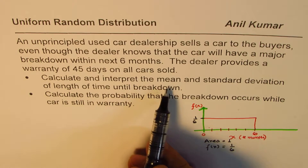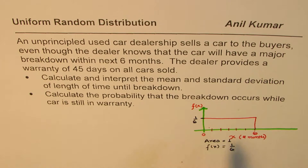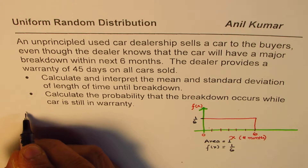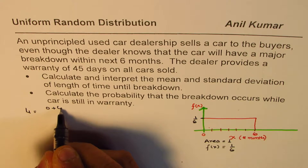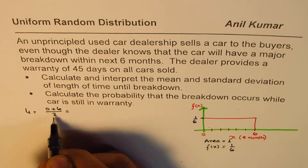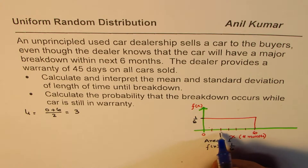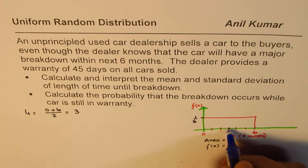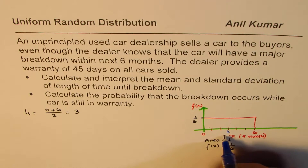Calculate and interpret the mean and standard deviation for such a uniform distribution. The mean will be right at the center — the average value. The mean, which is mu, will be equals to (0 + 6) divided by 2, which equals 6 divided by 2, or 3. So the mean for this particular case will be at 3 months — that's the mean average value.